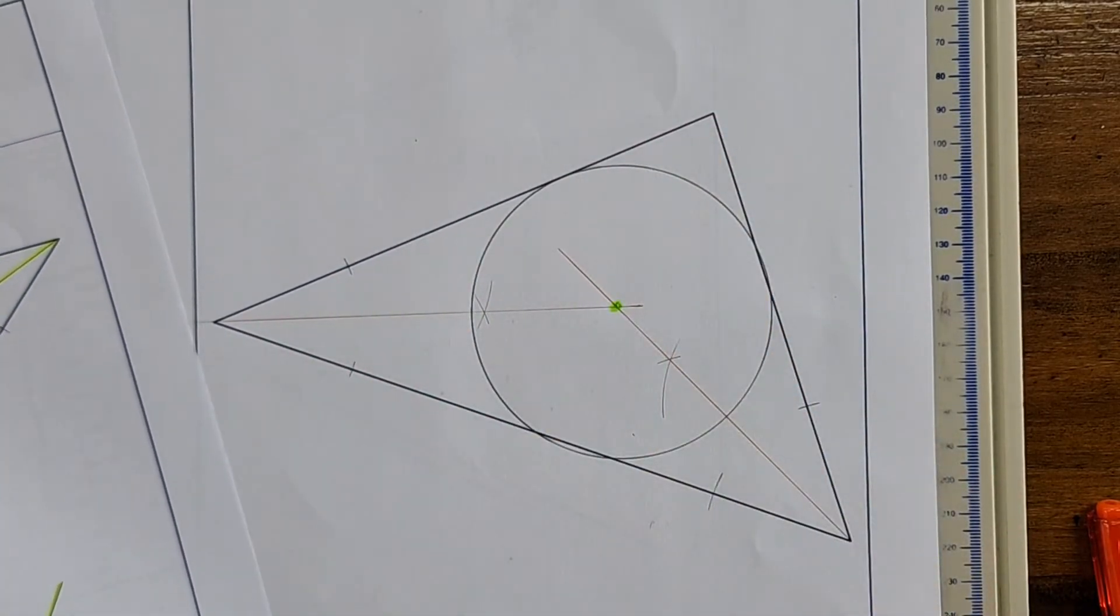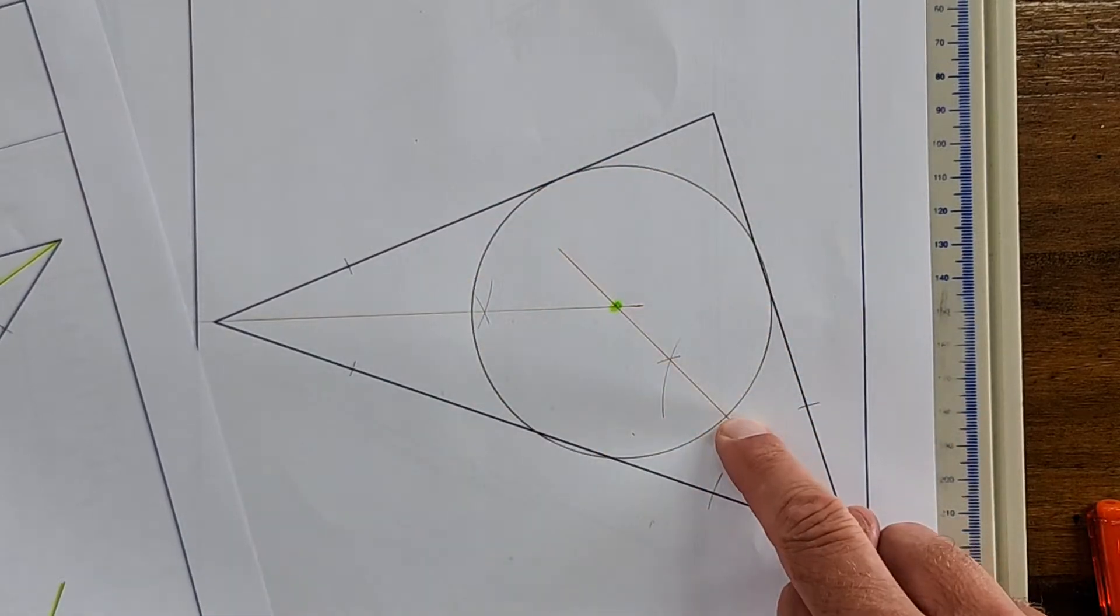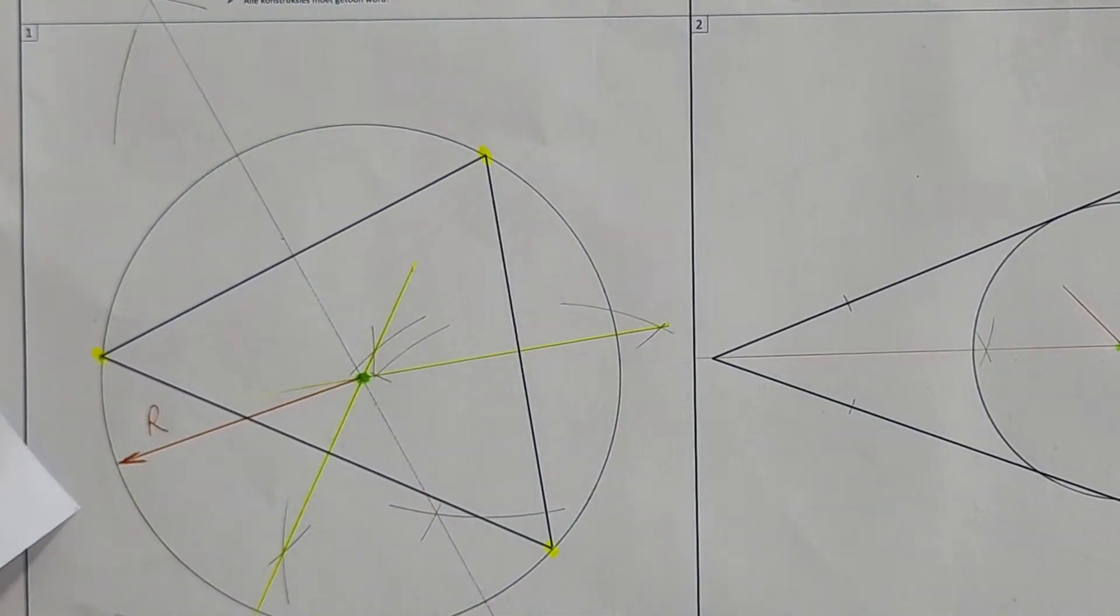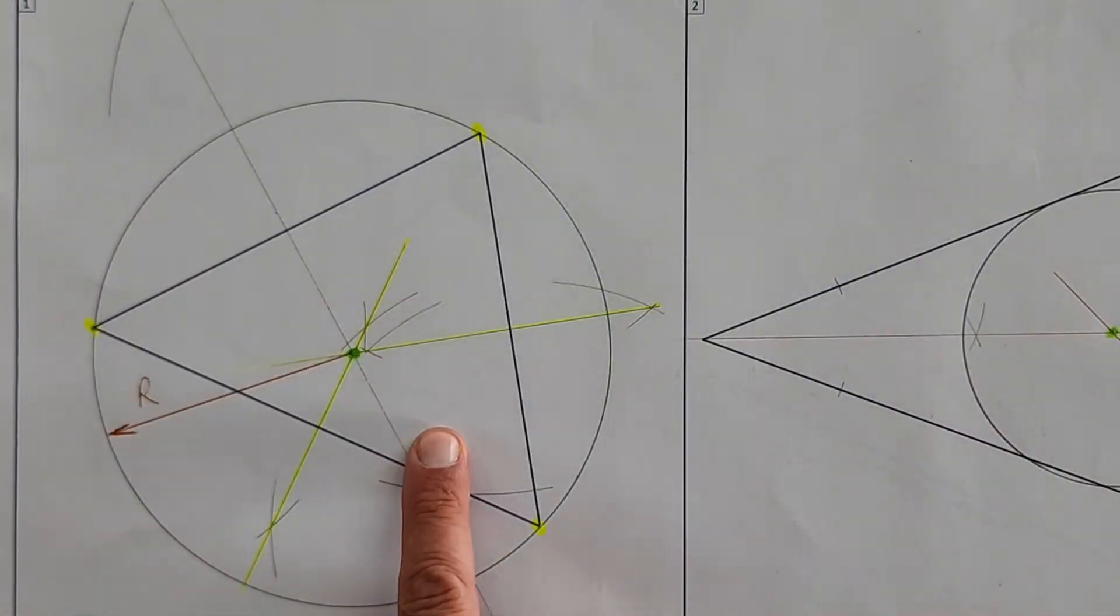On this side, it was the first technique, bisecting the perpendicular bisector, that helped me to get that one. Easy enough, engineering graphics and design is a lot of fun.